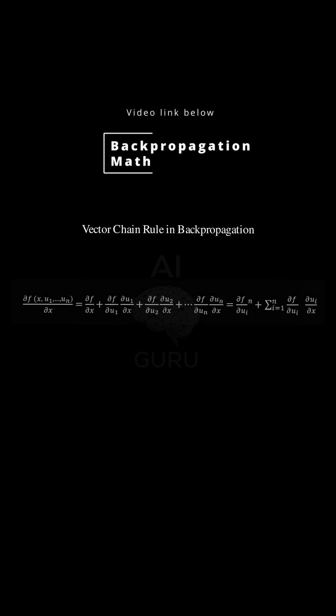The vector chain rule. This is backpropagation. This is the mathematical engine of backpropagation. The bridge is the idea of the total derivative.